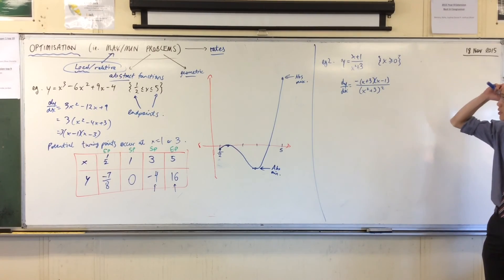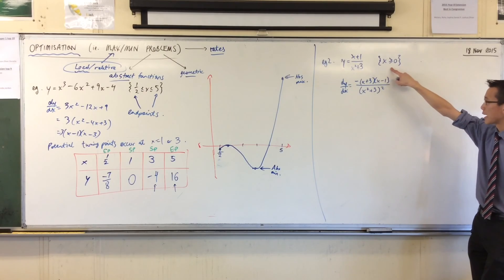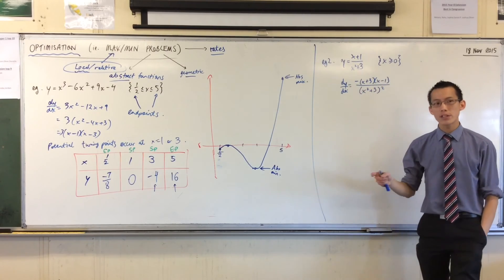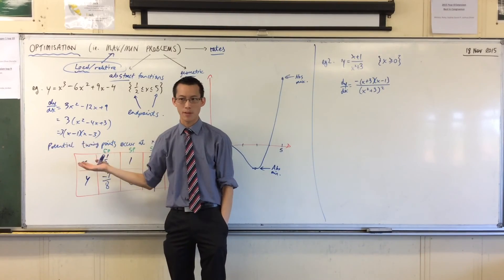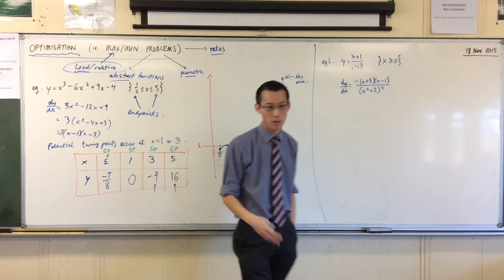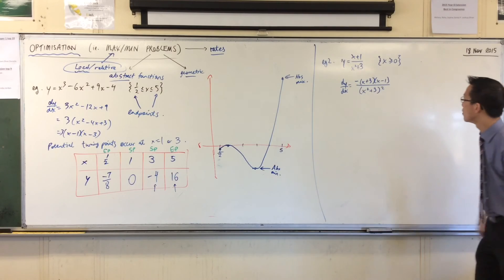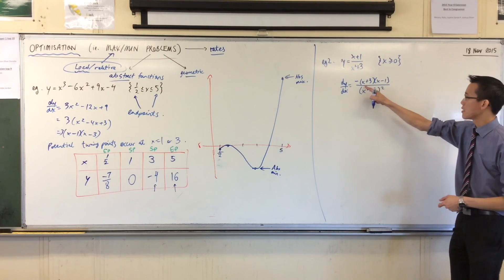Now, when you have a look at this, I'm in a restricted domain. Here I've given you the derivative, right? So you remember, the first thing we went for was telling me where the stationary points are. The potential turning points, rather. Where are the potential turning points here? Minus 3 and 1.